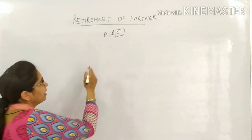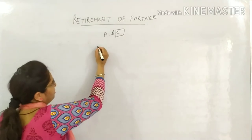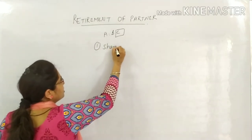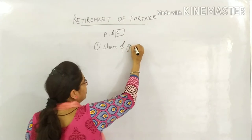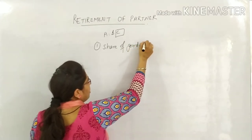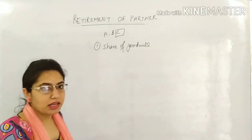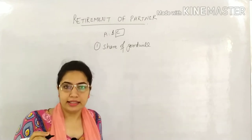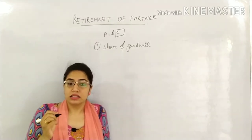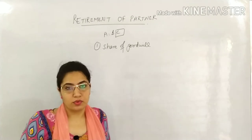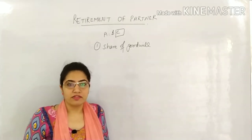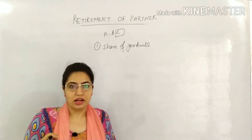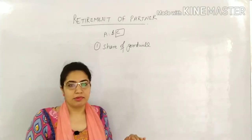When a partner retires, he wants three things from the company. First, he wants his share of goodwill. Why? Because the partner put in his honesty, hard work, talent, and capital, which helped increase the firm's goodwill. So when he worked, goodwill increased, and when he leaves the firm, he should get his share of that goodwill.